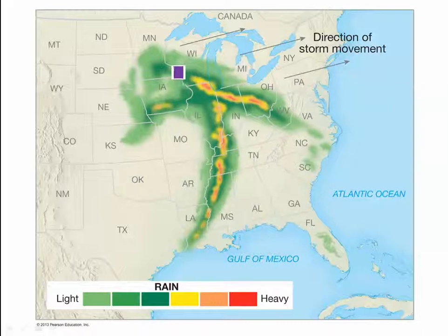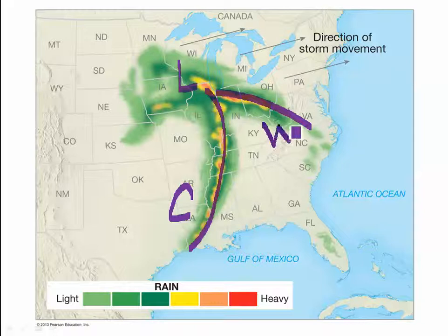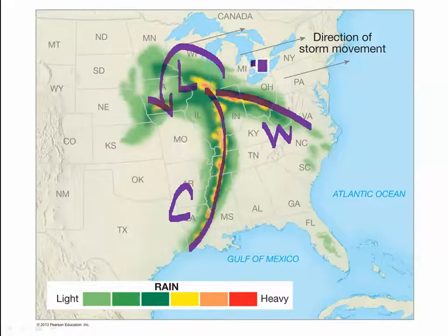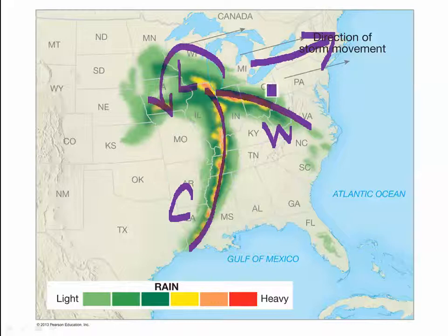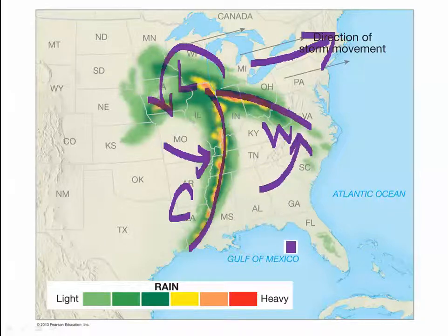So first, let's think about what we've got going on. This is a big low pressure system here. We know that this would be our cold front here, and this here would be our warm front. It's a mid-latitude cyclone in the northern hemisphere, so our circulation is counterclockwise. The general direction of the storm movement is from west to east, so we have this storm circulating counterclockwise. The cold front is moving this way, and this warm front is moving in this direction.